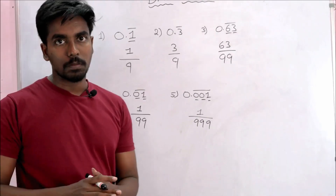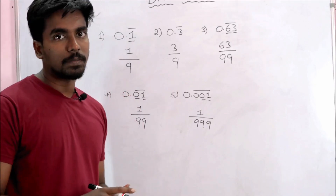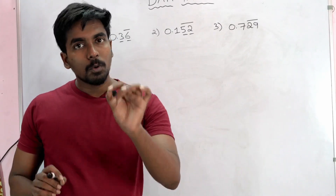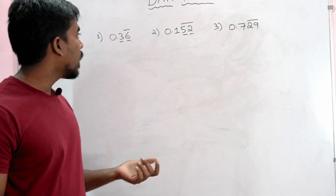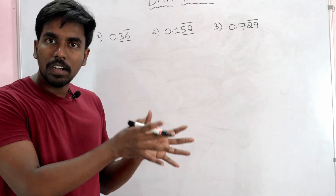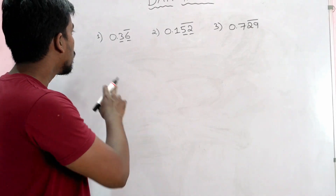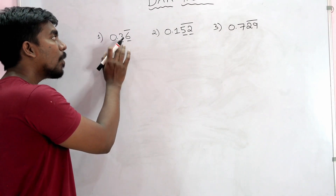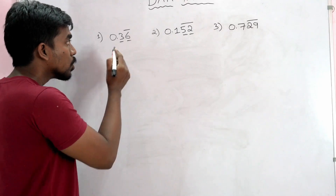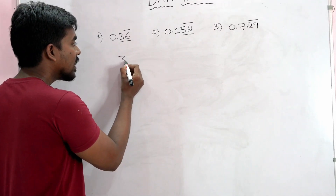Now we have no bar. For example, 0.36 bar — there is a 3 bar. So there is 1 number. First, we have to write the same number. So we write 36.